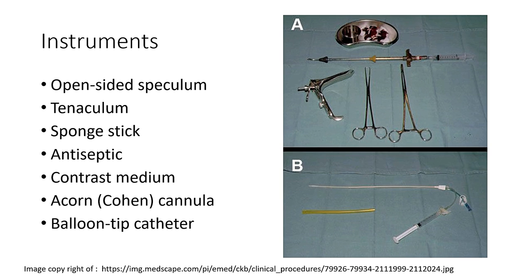Now, which are the instruments that are needed for Histosalpingiography? These are the open-sided speculum, which you can see here. Then the tenaculum and sponge stick, which you can see. Antiseptics, as shown here. The contrast media kept in the syringe. Then there are two options: option A, you need the acorn or Cajun cannula, or option B, you need the balloon-tip catheter, as you can see. These are all the instruments needed for your Histosalpingiography.